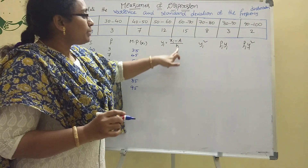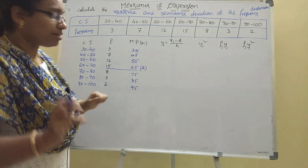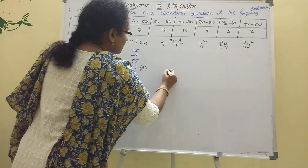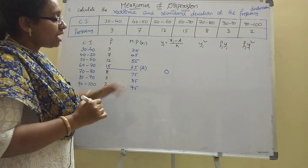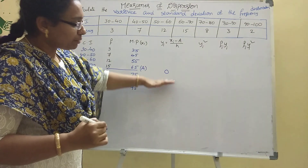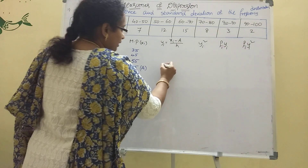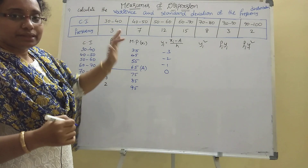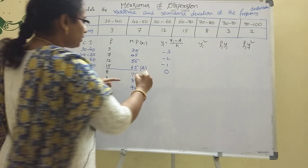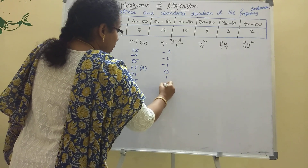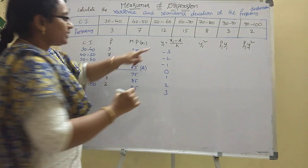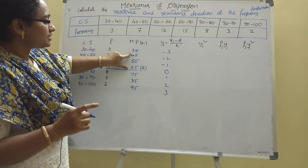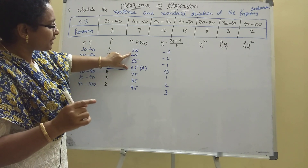The logic is simple. Where xi equals a, yi becomes 0. Values above a give positive yi, and values below a give negative yi — so we get values like minus 3, minus 2, minus 1, 0, 1, 2, 3 by applying (xi − a) / h.